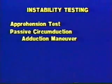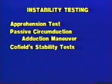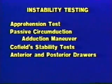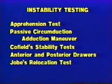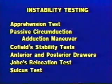The various tests for examination of shoulder instability attempt to document abnormal translation between the humeral head and glenoid fossa with passive stress applied. The following tests are performed: the classic apprehension test, passive circumduction abduction maneuver, test for posterior instability, Cofield's translational stability test performed in external rotation both sitting and supine, anterior and posterior drawers tested in the supine position, Jobe's relocation test, and the sulcus test for inferior and multidirectional instability.